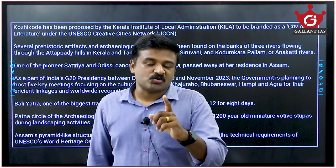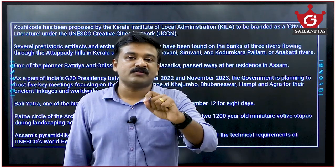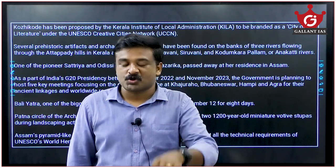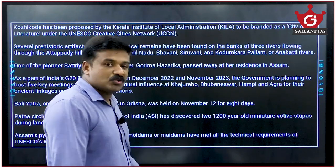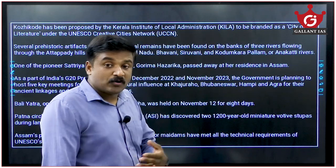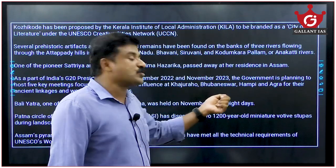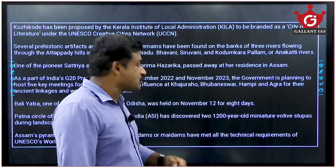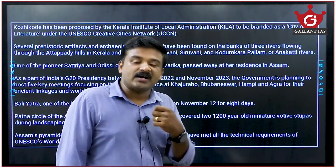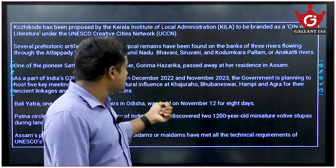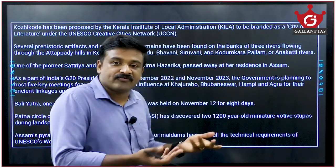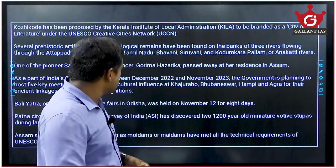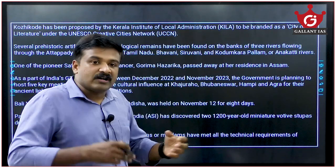When art and culture appears in the news, UPSC can ask questions from its very static portions. For example, as part of India's G20 presidency, the government planned to host five key meetings focusing on cultural influence at Khajuraho, Bhubaneswar, Hampi, and Agra. The cultural characteristics or features of these sites can be asked by UPSC.